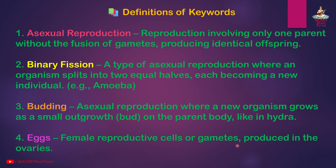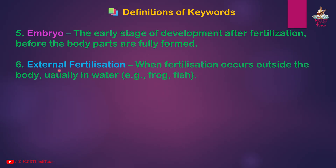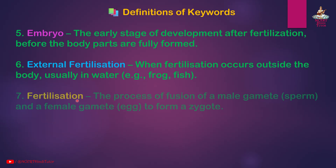Eggs: female reproductive cells or gametes produced in the ovaries. Embryo: the early stage of development after fertilization, before the body parts are fully formed. External fertilization: when fertilization occurs outside the body, usually in water — examples: frog, fish.